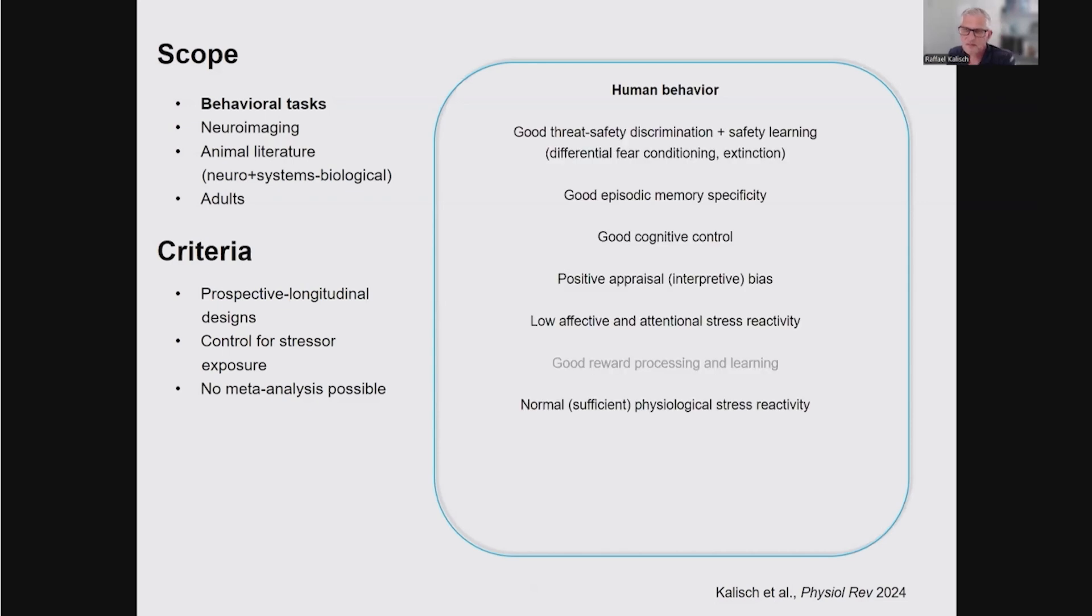A brief look at the behavioral task literature. This is already the summary. If you're good in discriminating threat and safety, appraising safety as safety, and in learning safety and extinction, then you're more protected. If you have good episodic memory specificity, good cognitive control, if you show positive appraisal biases, if your affective and attentional activity to stresses is relatively low, not overshooting, then you're more protected. There's some evidence for good reward system function. And finally, interestingly and importantly, it's good to show sufficient strong physiological stress responses. It seems that if you have a tendency to show blunted or undershooting responses, that is not good either.